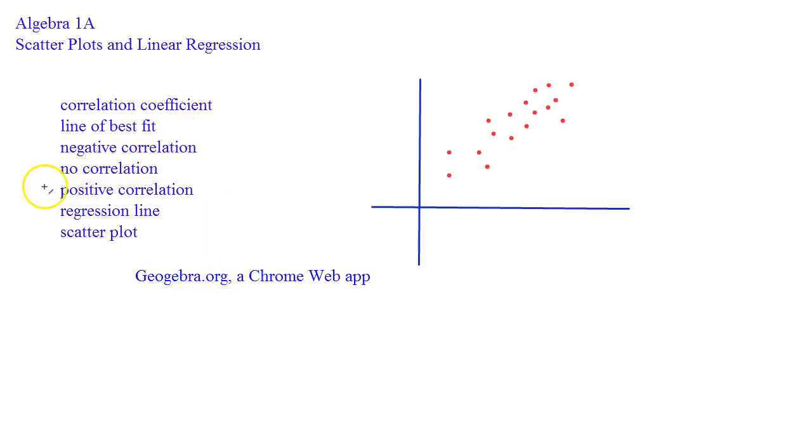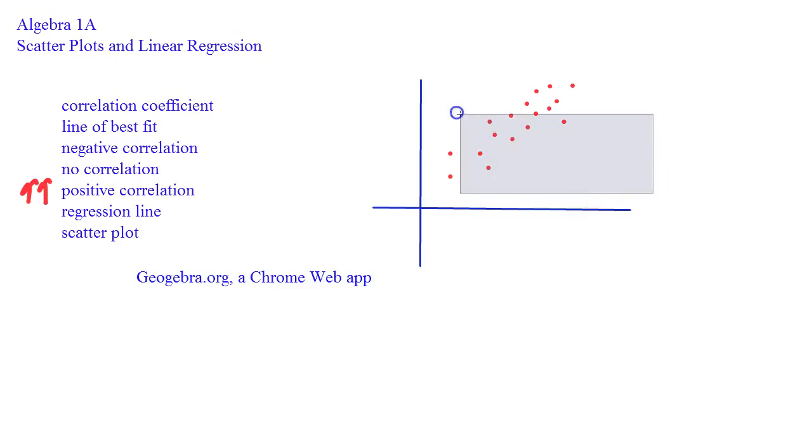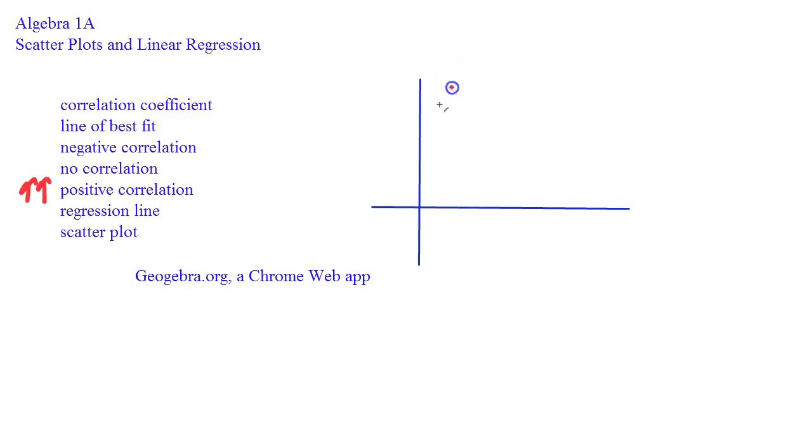Which, in other words, means as one goes up, the other one does as well. Now negative correlation is going to look really quite different. Let me get rid of all these data points. Negative correlation is going to look a little bit more skewed downwards.